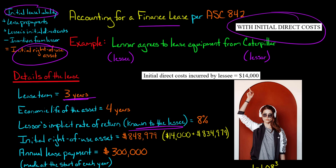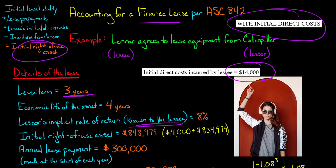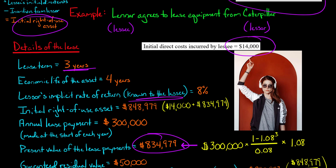We're going to start with the initial lease liability of $834,979, add any lease prepayments — which are zero in this example — and then add the lessee's initial direct costs. In this example, I'm assuming there's $14,000 of initial direct costs incurred by the lessee upon commencement of the lease, so that's going to increase the initial right of use asset. You would also subtract any incentives from the lessor, but those are zero here. So our initial right of use asset is $848,979, which is the initial lease liability plus the initial direct costs of $14,000.